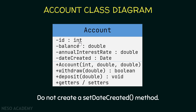The id is an integer. We also have a private attribute called balance which is a double - this balance represents the amount of money inside the account. After that we have a private attribute called annualInterestRate which is also a double, and finally a private attribute called dateCreated.